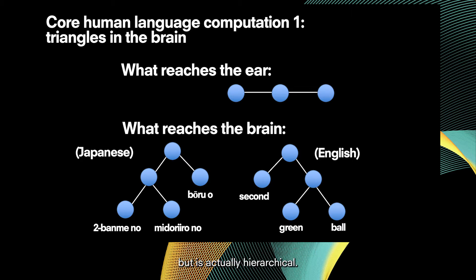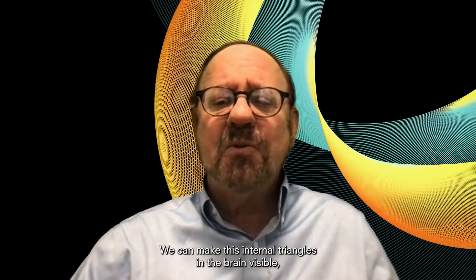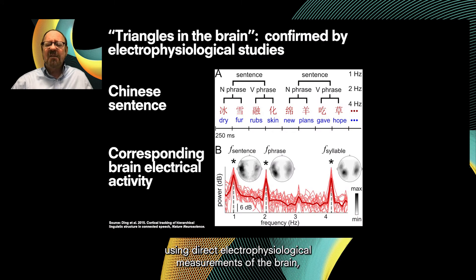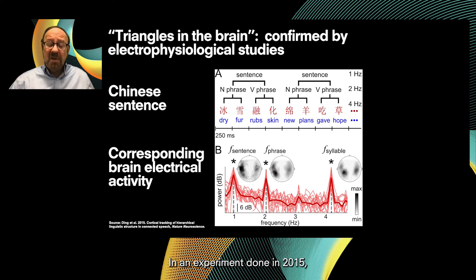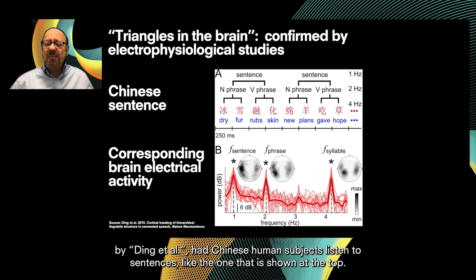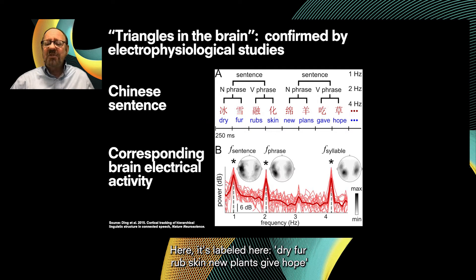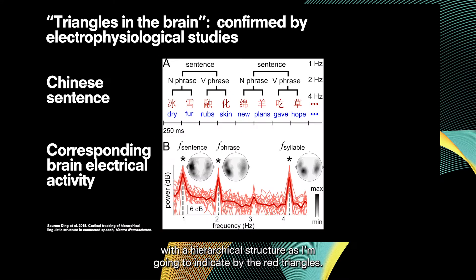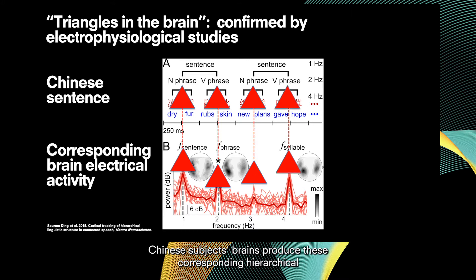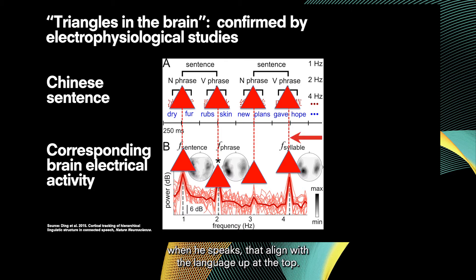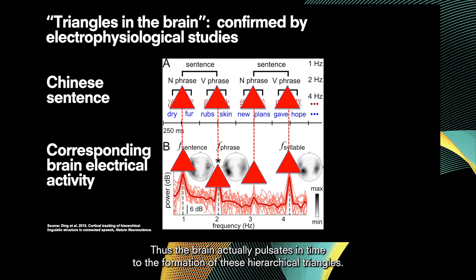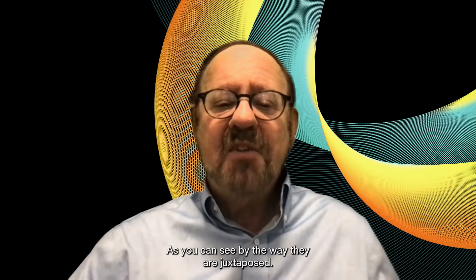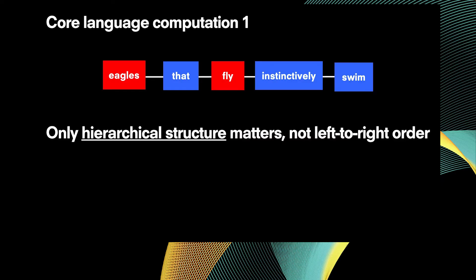We can make these internal triangles in the brain visible using direct electrophysiological measurements. In a 2015 experiment, Ding et al. had Chinese subjects listen to sentences like 'dry fur rub skin, new plans give hope,' with a hierarchical structure indicated by red triangles. The subjects' brains produced corresponding hierarchical electrical patterns — peaks that align with the language structure. The brain actually pulsates in time to the formation of these hierarchical triangles.